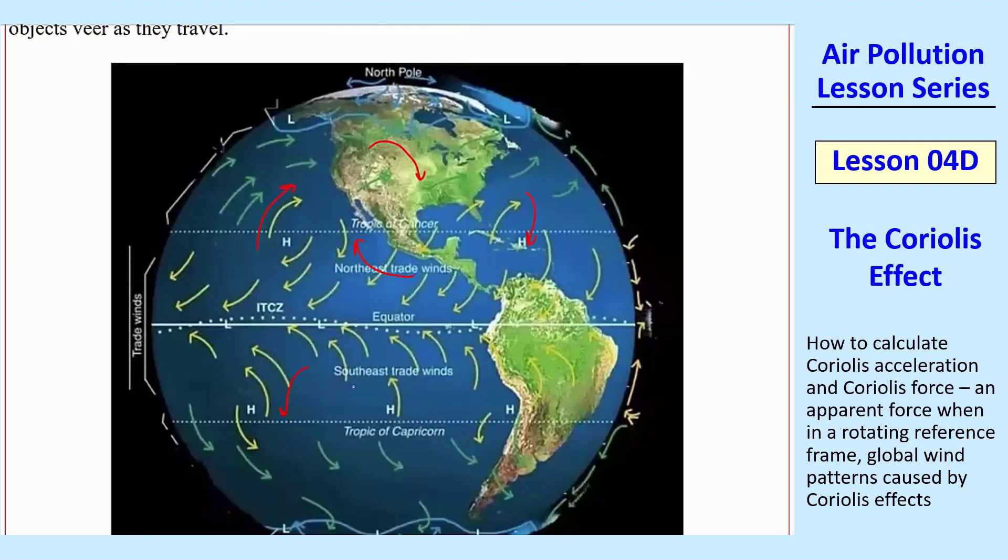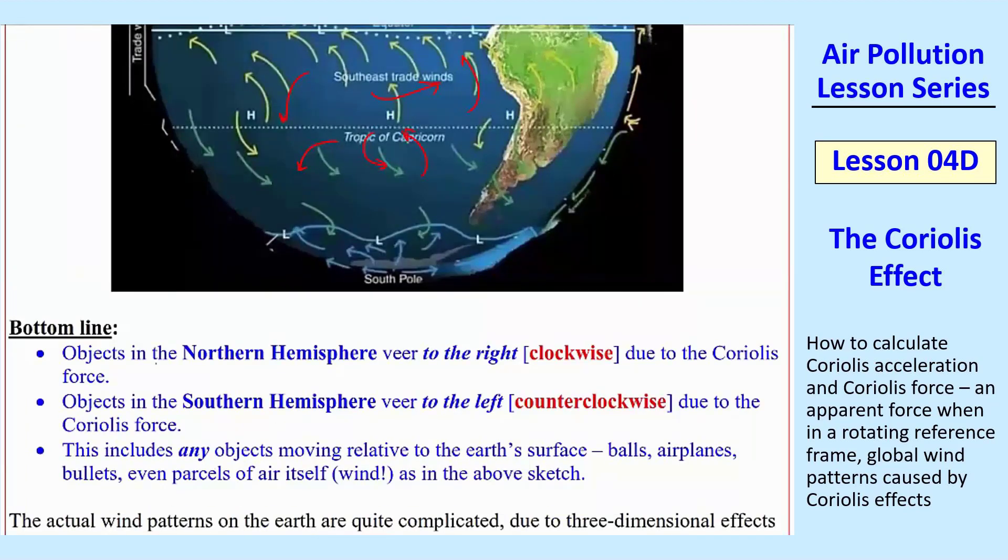And then the same thing happens in the southern hemisphere, except we're veering to the left always, no matter what direction you're starting from. So it's different in the northern and southern hemisphere. And I just summarize this here. Objects in the northern hemisphere veer to the right clockwise due to Coriolis. In the southern hemisphere,